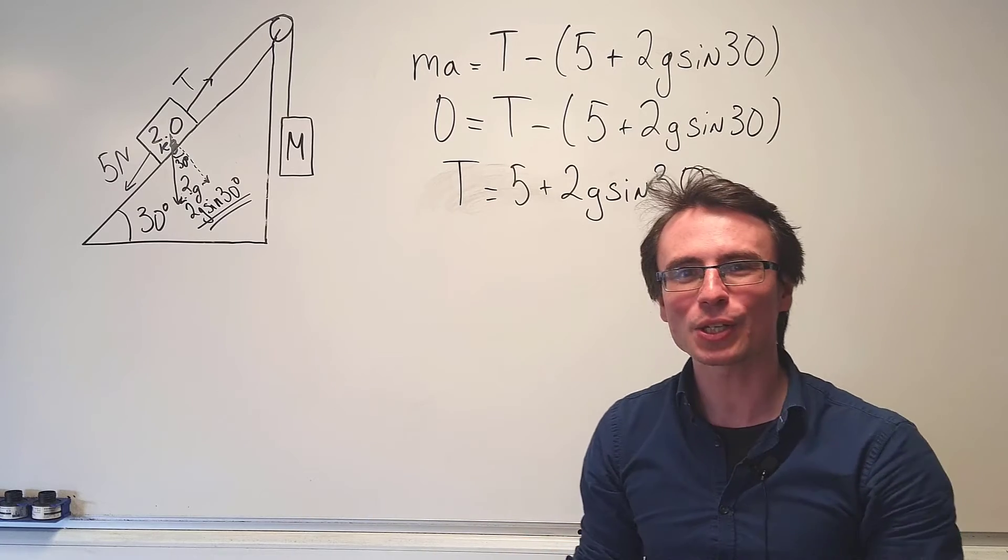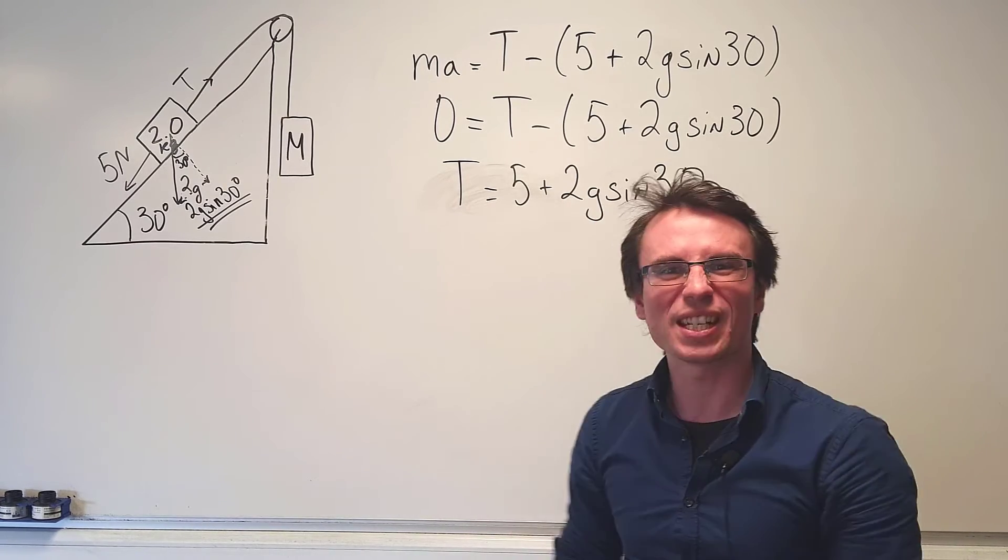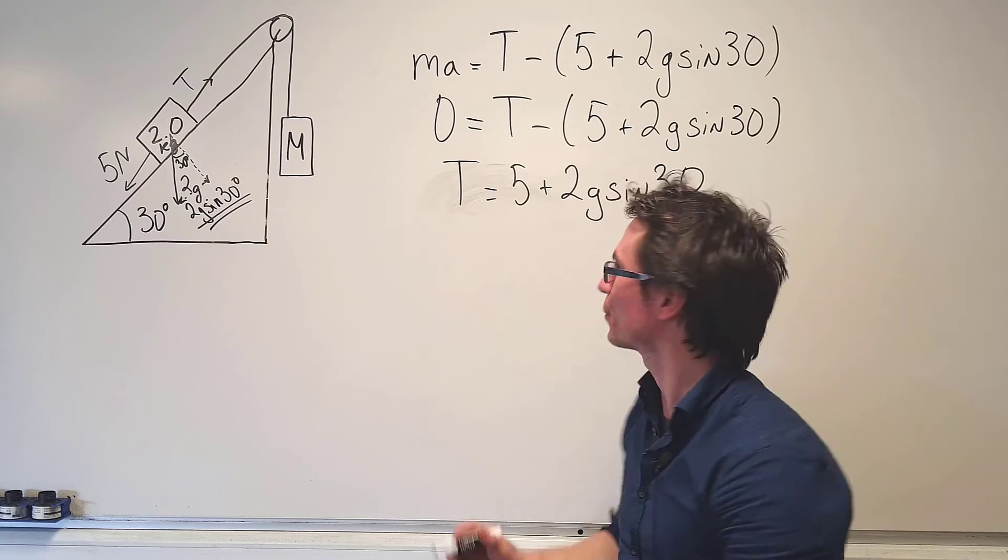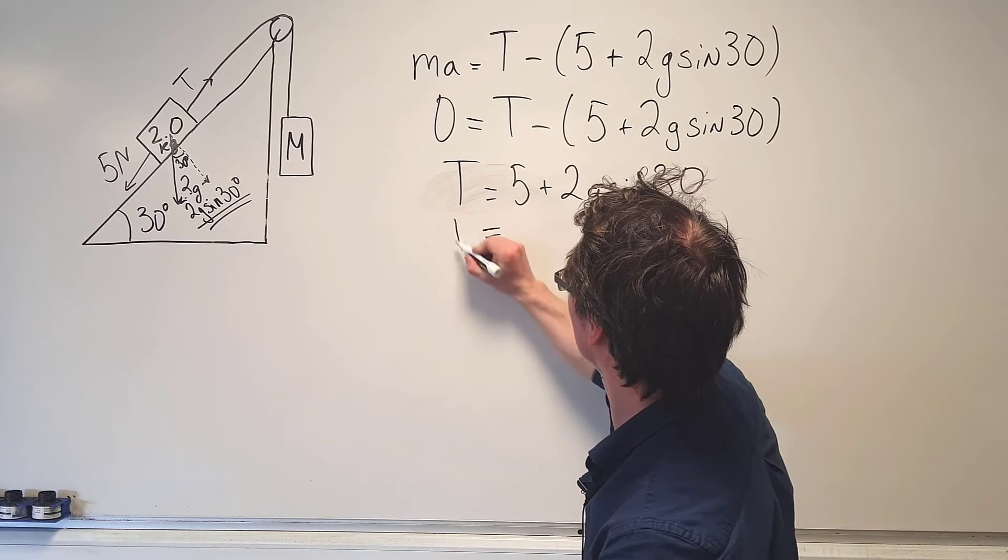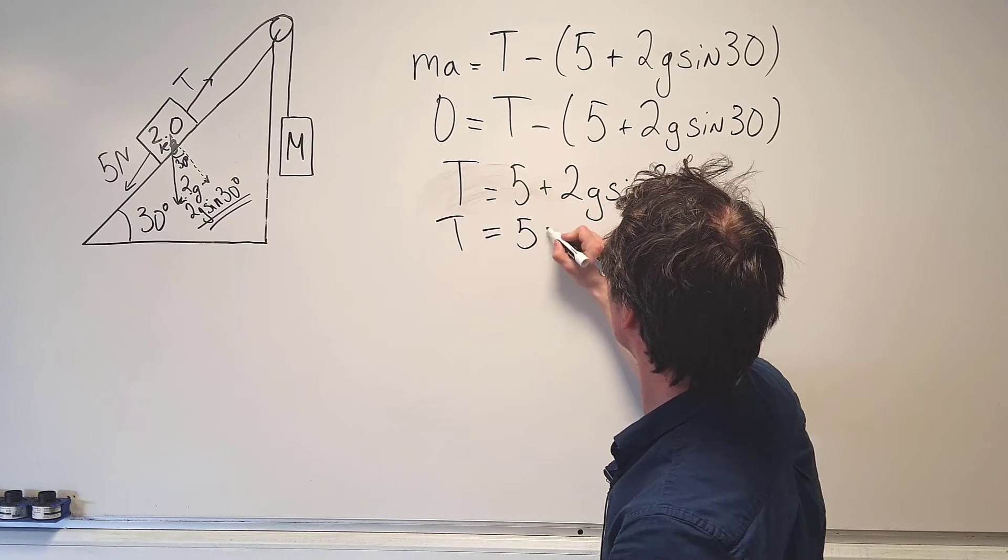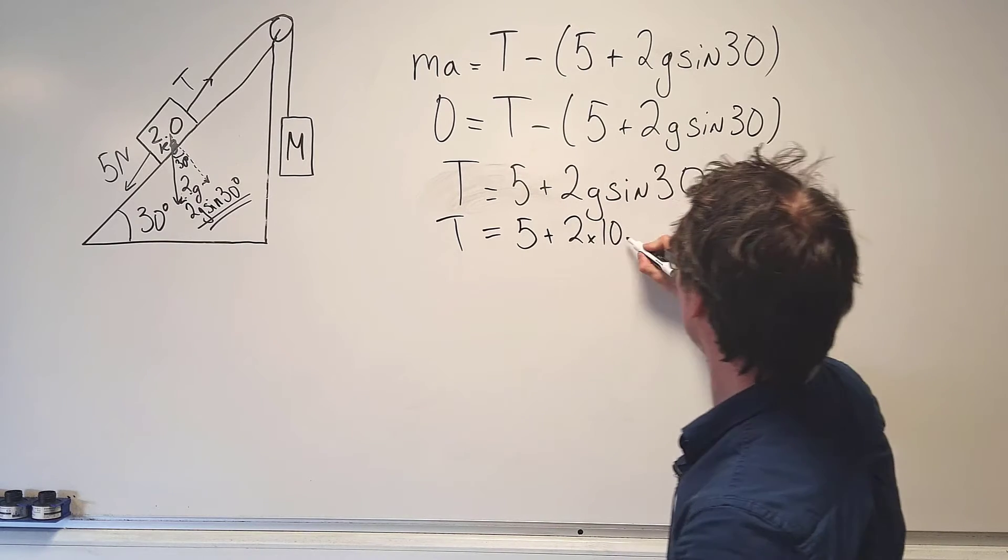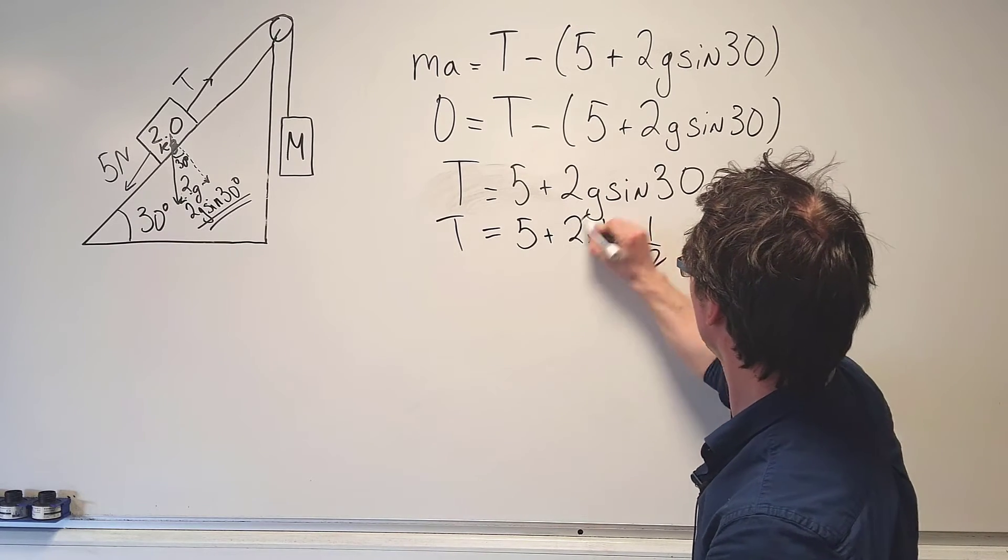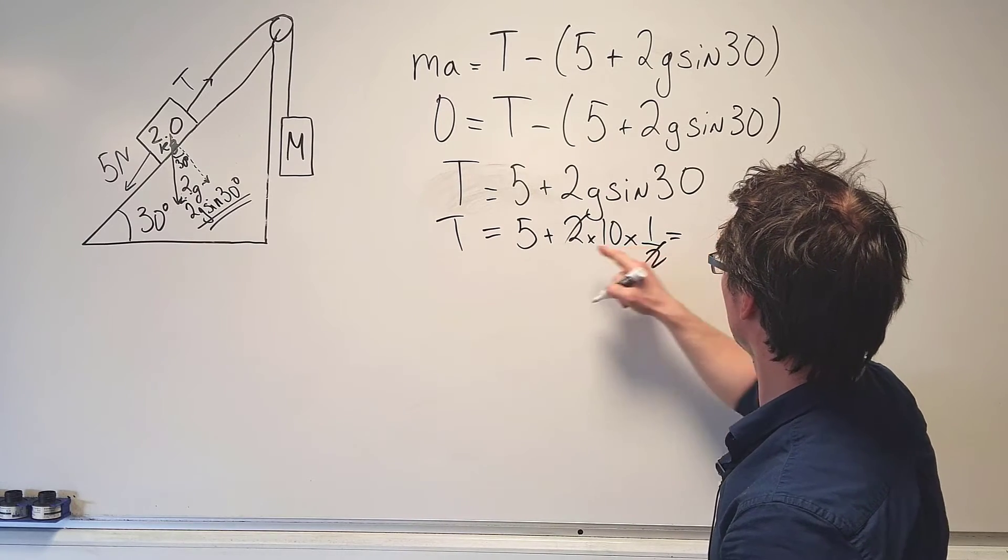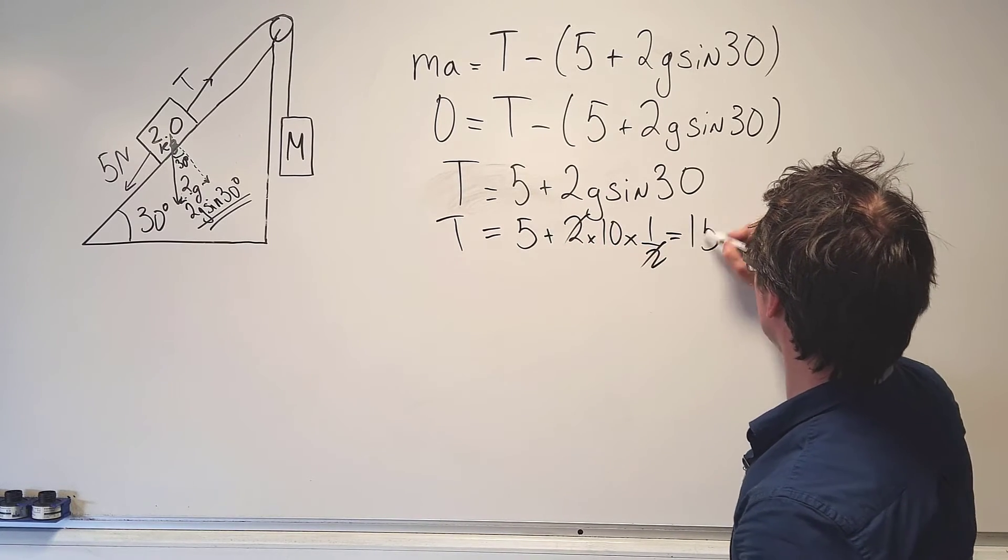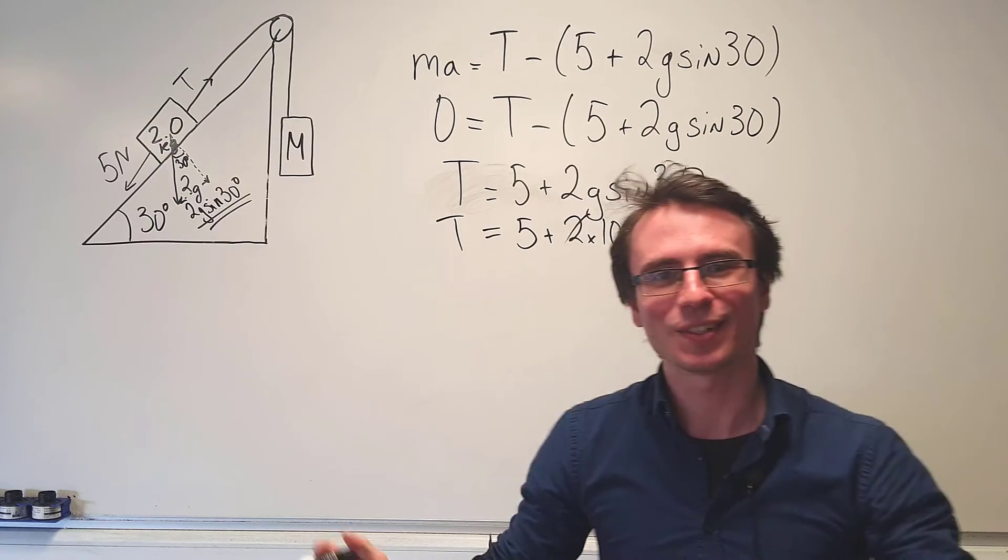Now for these questions we're not allowed a calculator so we just take g to be equal to 10 newtons per kilogram, meaning that the tension T will be equal to 5 plus 2 times 10 sine 30, which is just a half. Those are going to cancel out so this will just be equal to 5 plus 10 which is equal to 15 newtons.